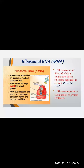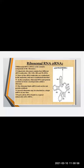Ribosomal RNA is a catalytic component of the ribosome. Eukaryotic ribosomes contain different types of RNA molecules: 18S, 5.8S, 28S, and 5S RNA. Three of these RNA molecules are synthesized in the nucleus and one is synthesized elsewhere. In the cytoplasm, ribosomal RNA and protein combine to form a nucleoprotein called the ribosome, which binds mRNA and carries out protein synthesis. Several ribosomes may be attached to a single mRNA at a time. Nearly all RNA found in a typical eukaryotic cell is rRNA.